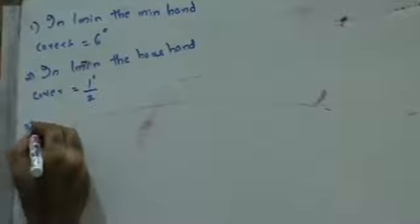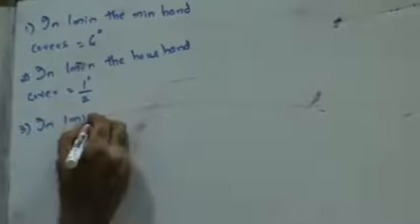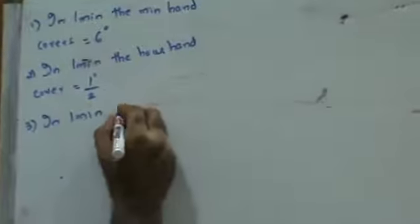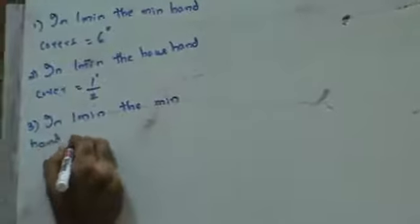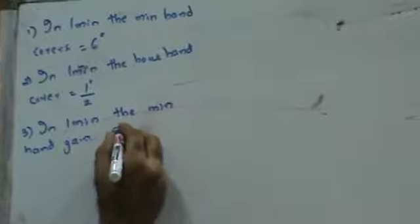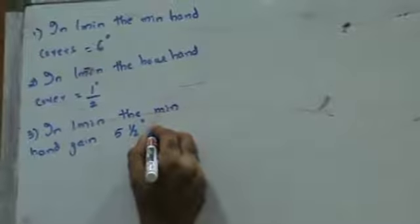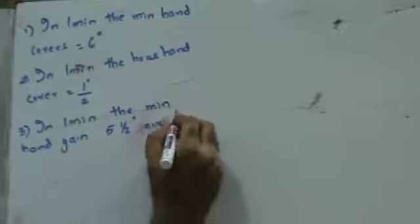In one minute, the minute hand gains five and a half degrees over the hour hand.